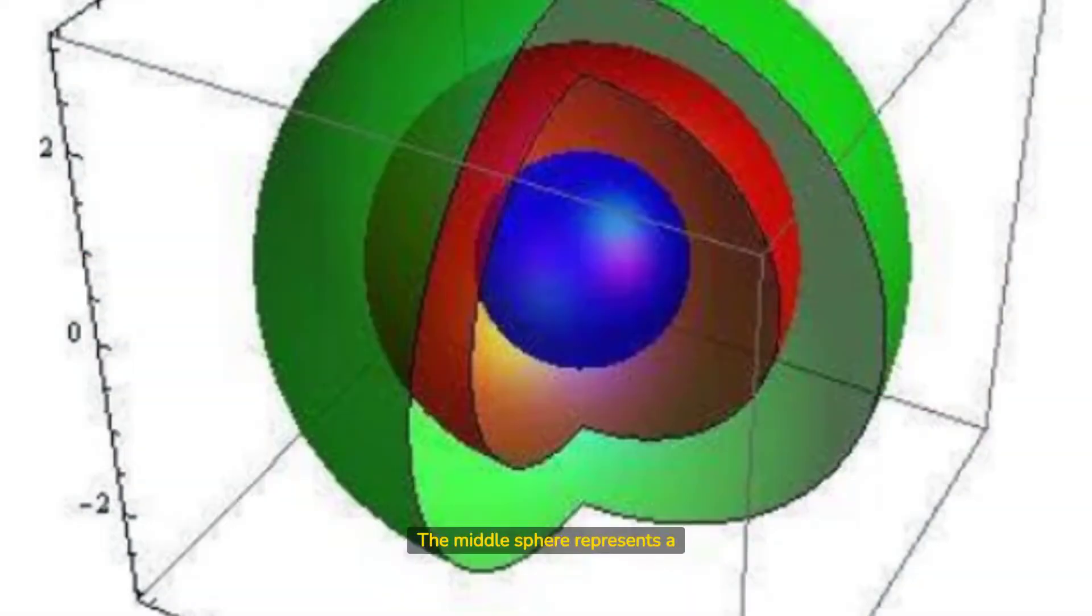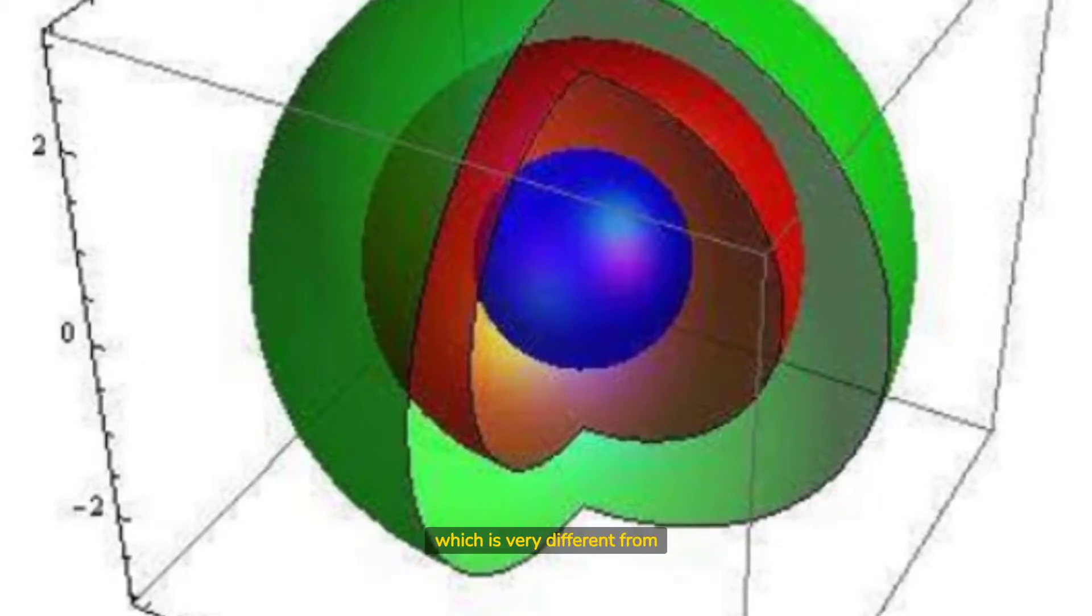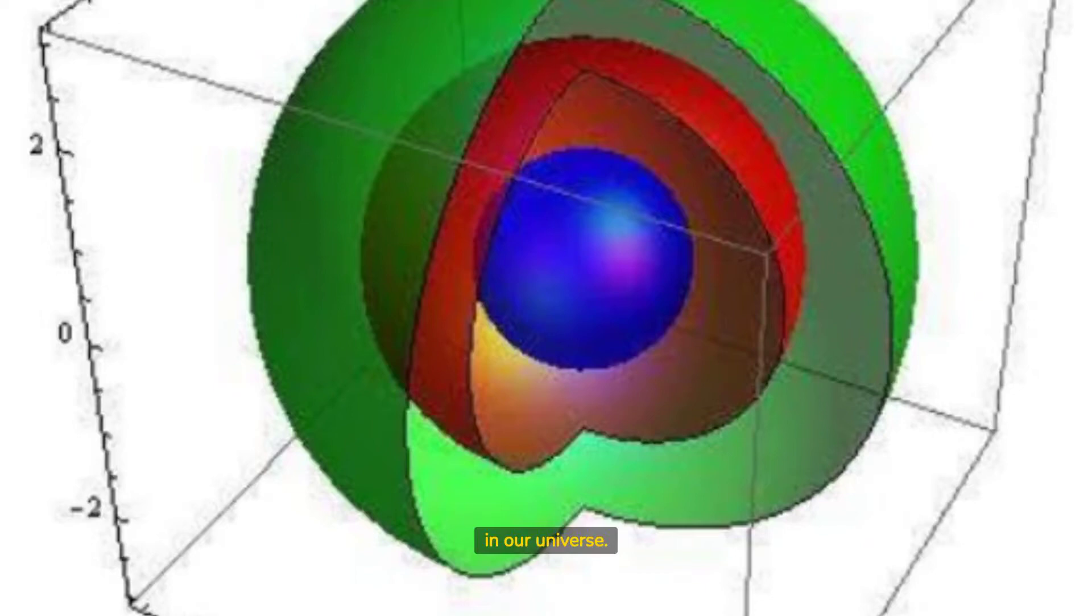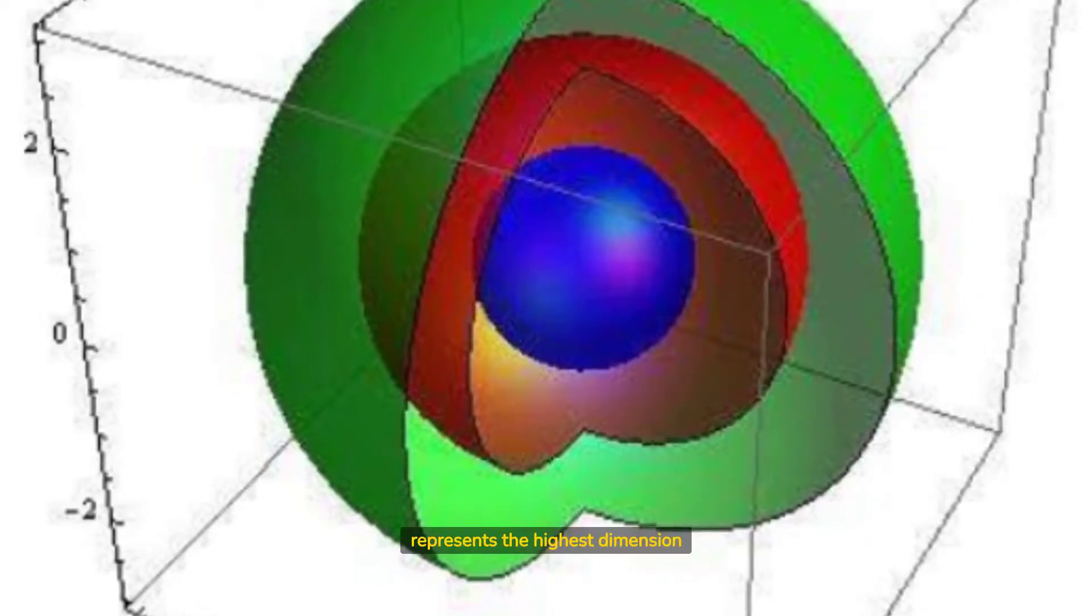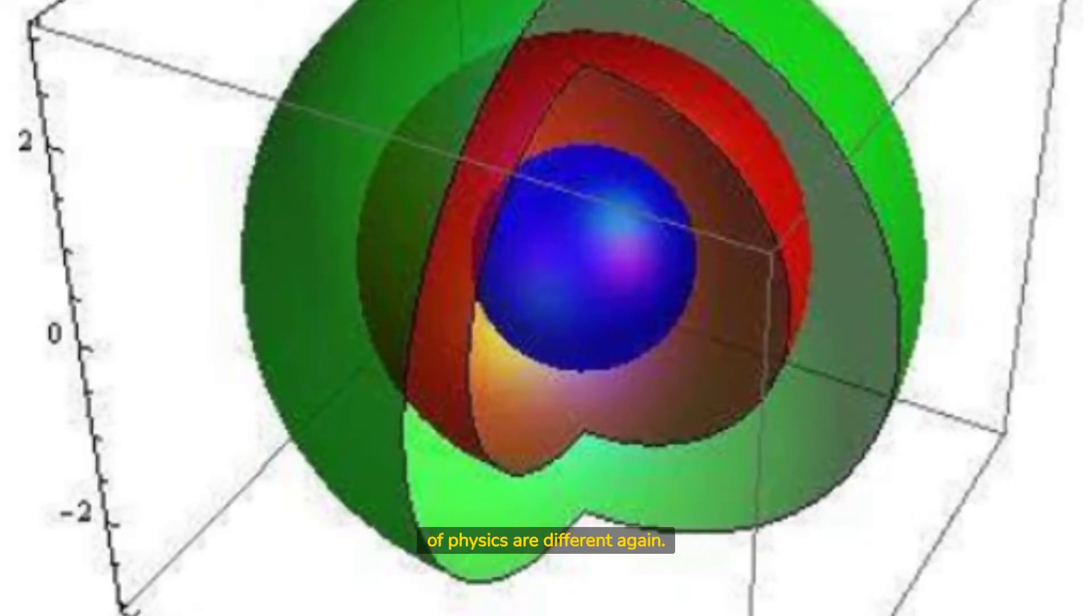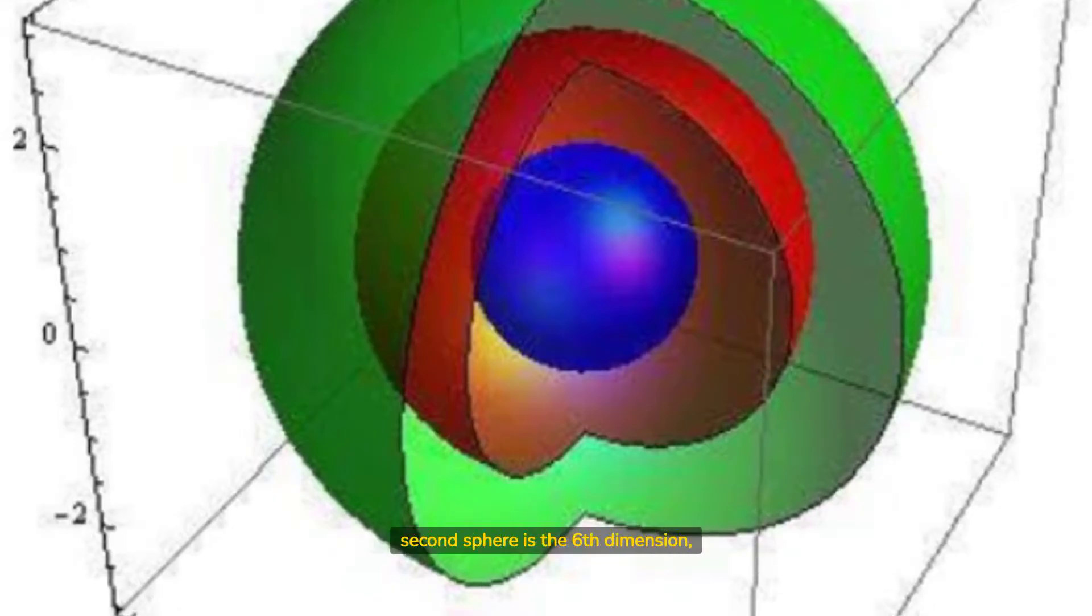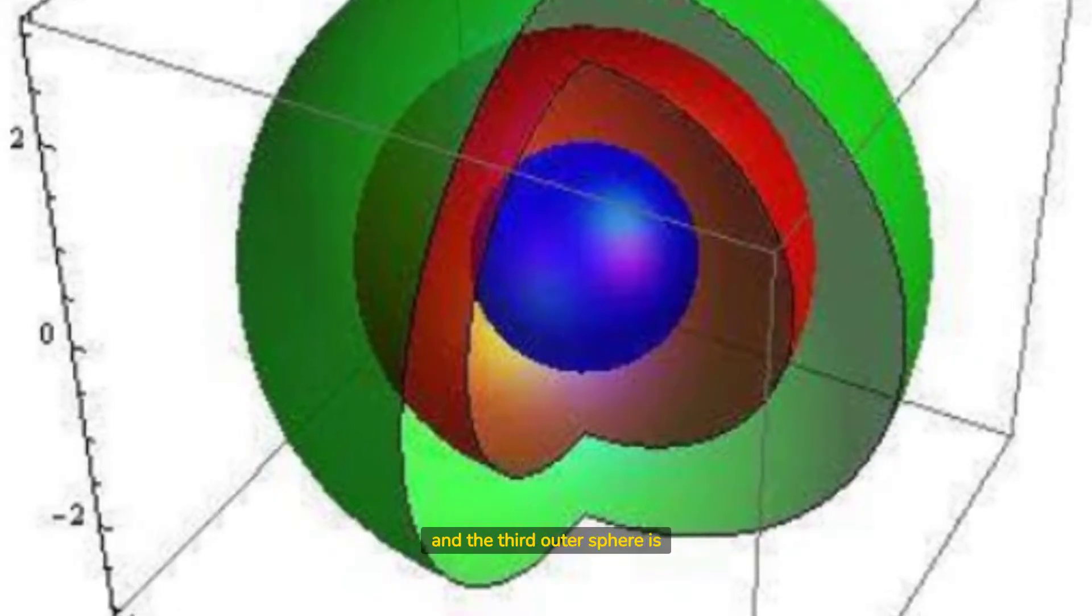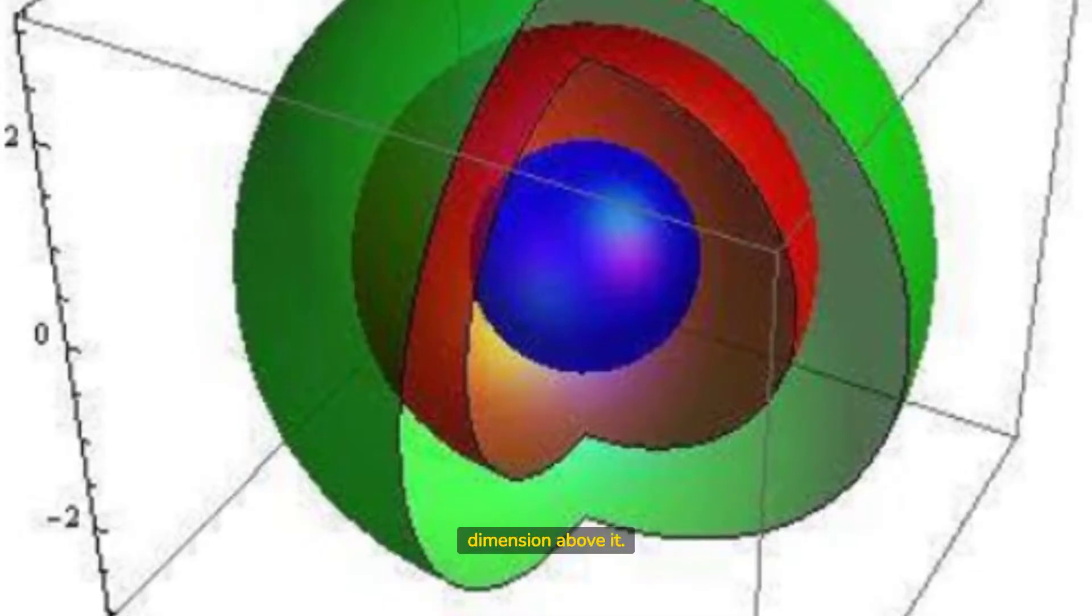The middle sphere represents a higher dimension. This dimension is governed by quantum physics, which is very different from the classical physics that we observe in our universe. Finally, the outer sphere represents the highest dimension governed by the physics of string theory, where space and time and the laws of physics are different again. The first inner sphere is the third dimension, the second sphere is the sixth dimension, and the third outer sphere is the ninth dimension, each expanding into the space-time dimension above it.